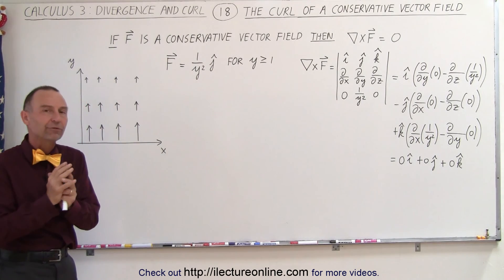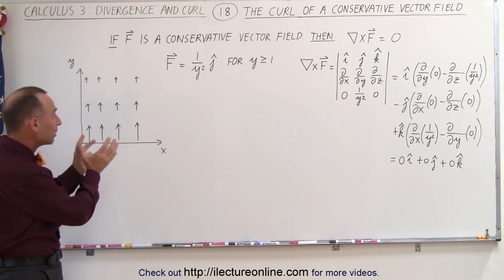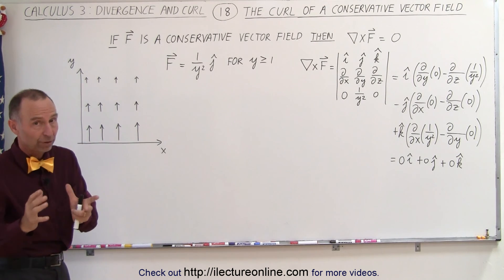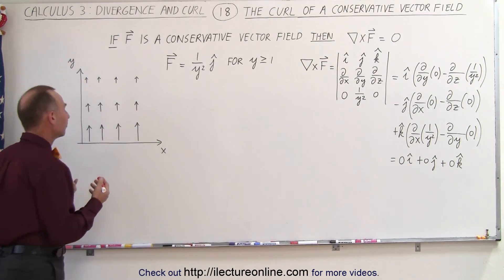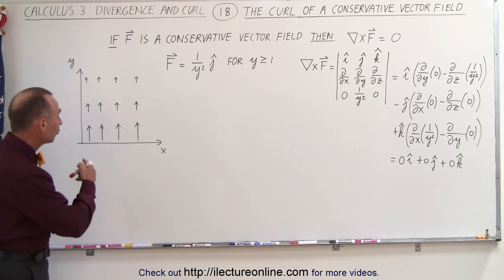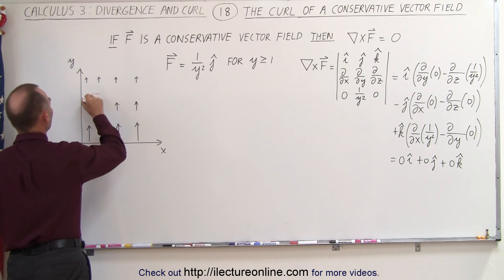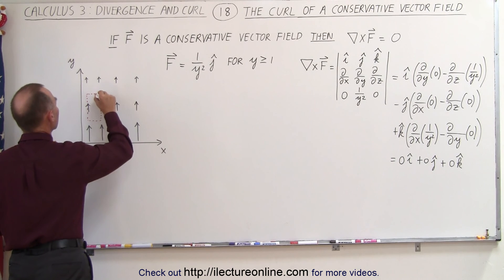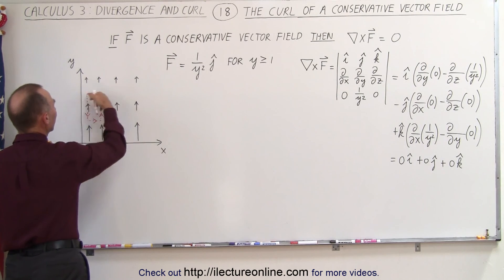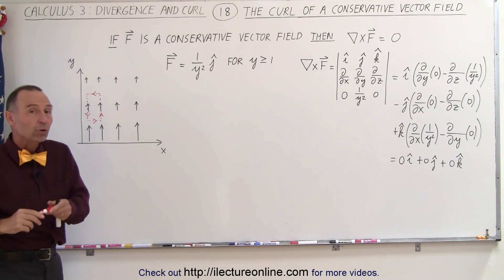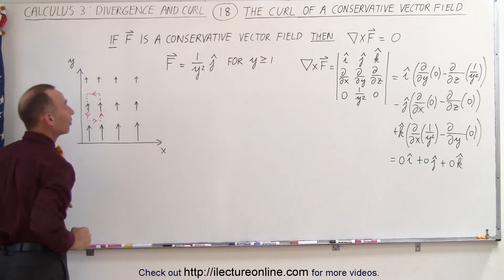Let's get an intuitive feel for that conservative vector field using the same technique as before to calculate the magnitude of the curl, which should be zero. One of the ways to determine if we're dealing with a conservative vector field is to perform a line integral along a closed path. When we integrate across the horizontal sections, the contribution of that line integral should be zero because the direction of the path is perpendicular to the direction of the vector field.